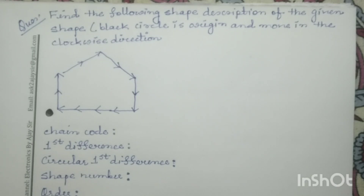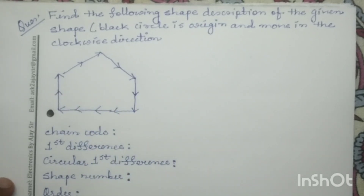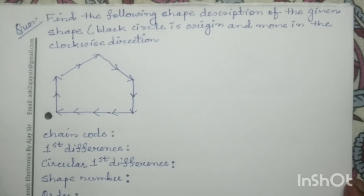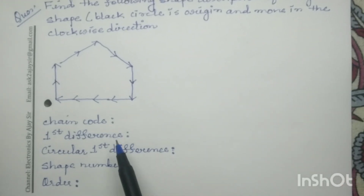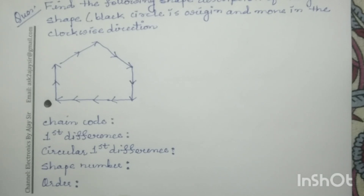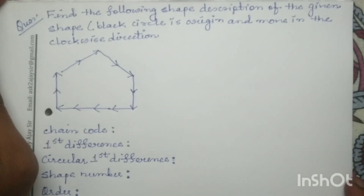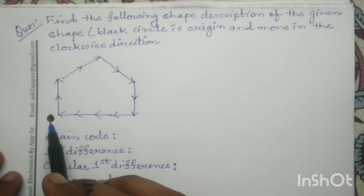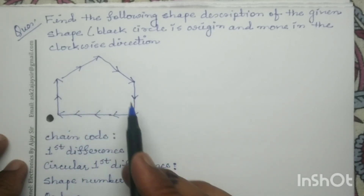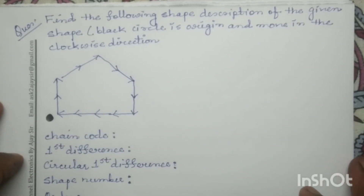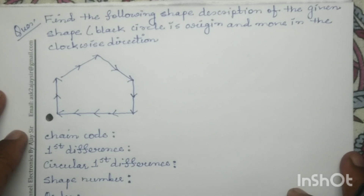Good morning. Let us solve another question on chain code. In this question, a boundary is given, and for this given boundary we have to determine the chain code, first difference, circular first difference, shape number, and the order. This black dot represents the origin from which we have to start the rotation, and in this question we will use the eight-directional chain code.